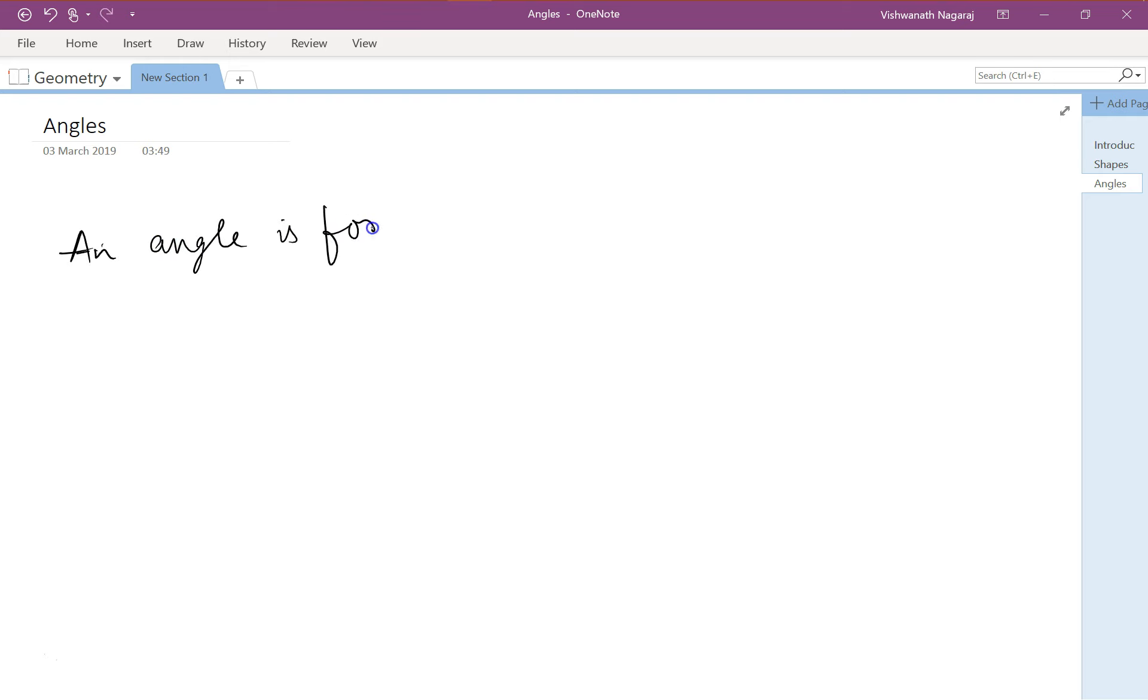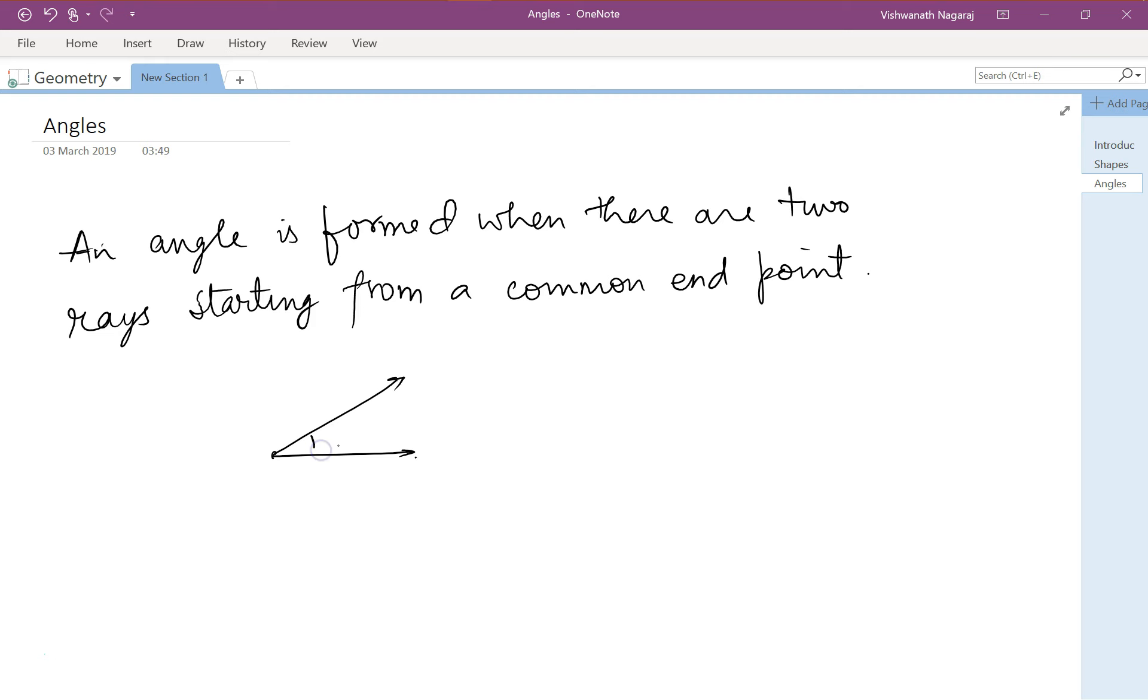An angle is formed when there are two rays starting from a common endpoint. So this is the point, from here you have one ray and another ray. Now an angle is formed. The rays are called arms or sides of the angle. The common endpoint is called the vertex.